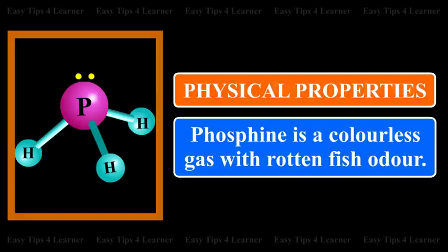Physical Properties: Phosphine is a colorless gas with a rotten fish odor.